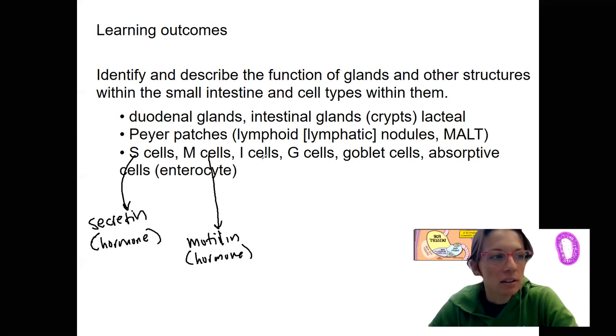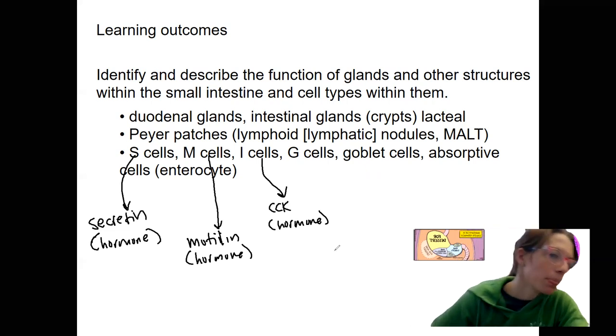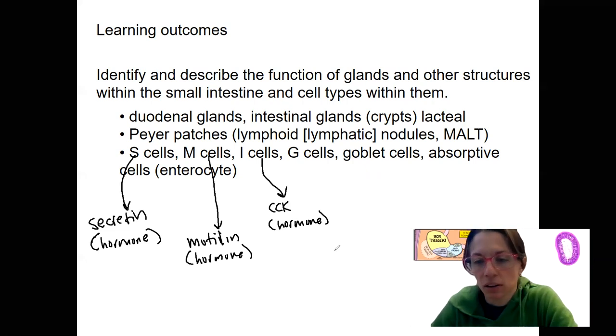I cells. CCK. Remember that hormone? Cholecystokinin. Cholecystokinin. Going to be related to regulating gastric activity, but also pancreatic and bile juices.